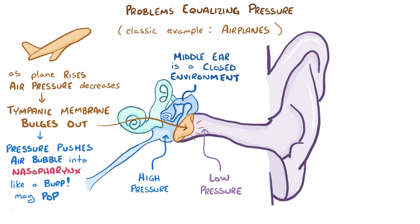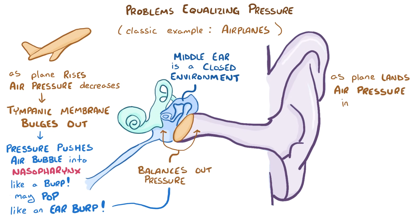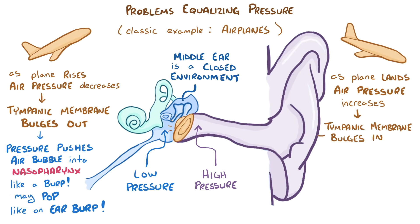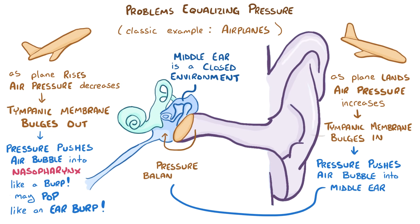In fact, sometimes there's a popping sound that can be heard, like an ear burp. Through this process, the middle ear and the outer ear balance out their pressures. The reverse process happens when a plane lands, since the air pressure on the ground is relatively high and the middle ear pressure is relatively low because a tiny bit of air was burped out. The volume of air in the middle ear shrinks a bit, creating a slight vacuum, and it can cause the tympanic membrane to bulge a bit into the middle ear. Again, a small bubble of air can slip into the middle ear to help bring up the pressure and balance things out.